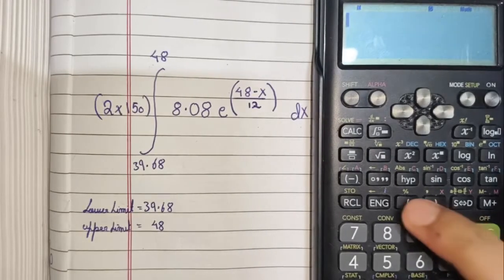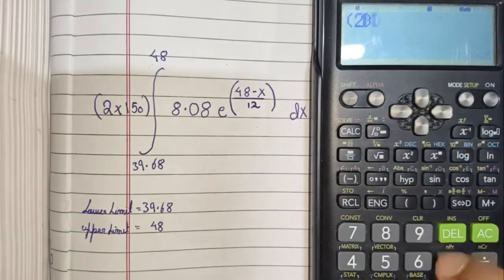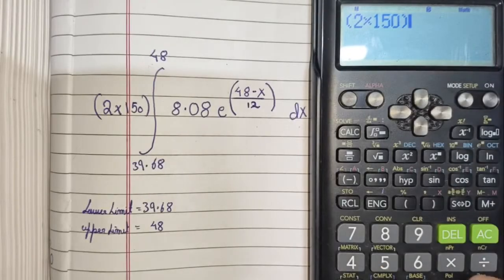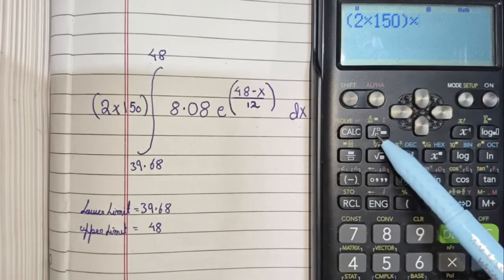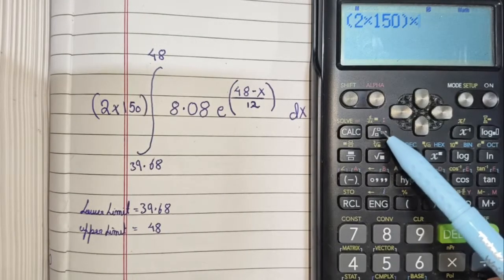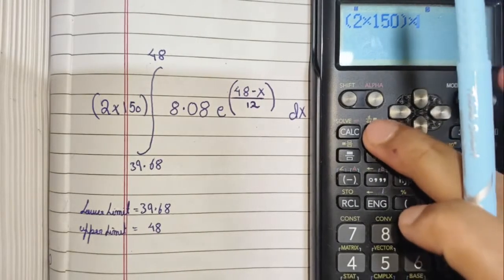Let's start. First of all, 2 into 150, and then we will start our integration. You can see this is the definite integral sign, which can be found in any Casio calculator. Press it.